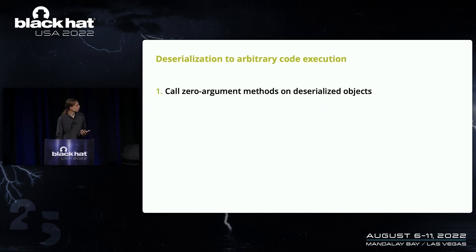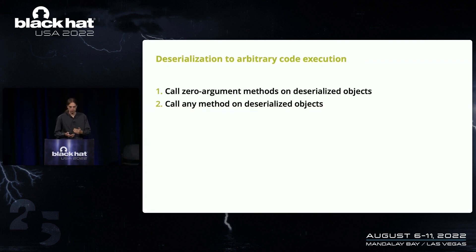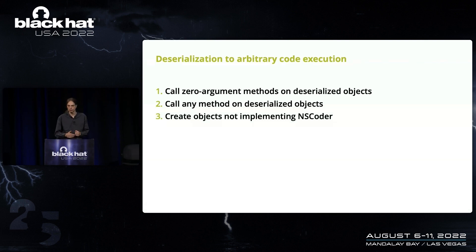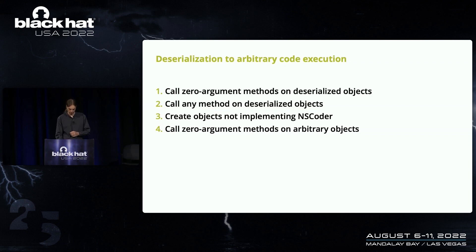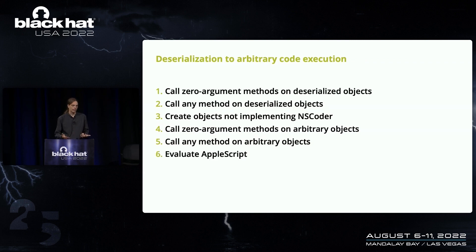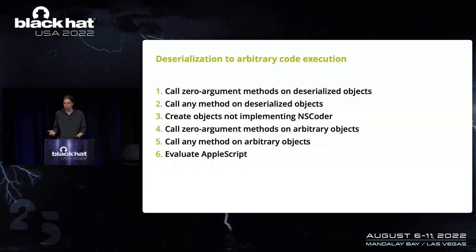Skipping a few steps for time and disclosure reasons, the full chain goes: call zero-argument methods, then call any method, then use a trick to create objects that don't implement NSCoder and are normally not serializable, then call zero-argument methods on those, then call arbitrary methods on those. That's basically enough to evaluate AppleScript within the target process. Evaluating AppleScript is already very powerful — for example, attacking Mail lets us access files in the mail data vault, copy them out, or spawn a reverse shell.